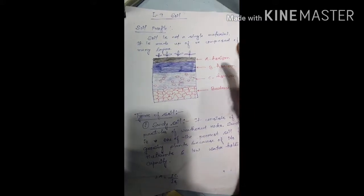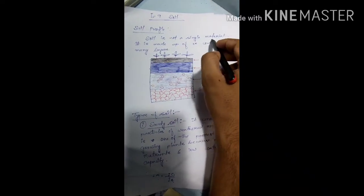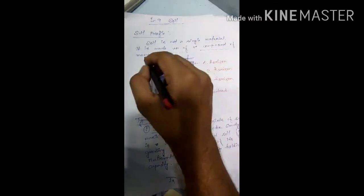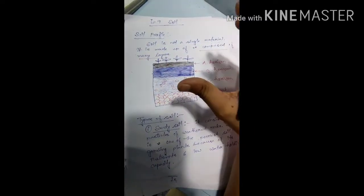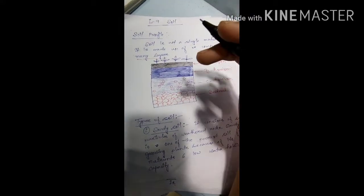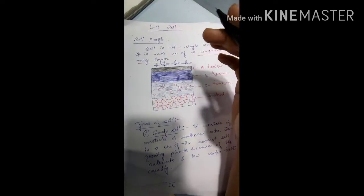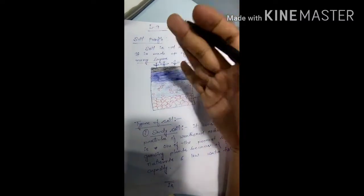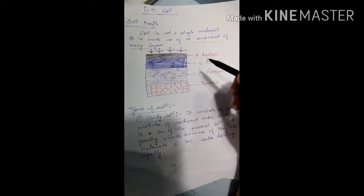Soil is not a single material or a single substance. It is made up of, or composed of, many layers. If you take a big piece of soil and look at the cross section from one side, you can see the different layers. So soil is basically composed of many different layers.